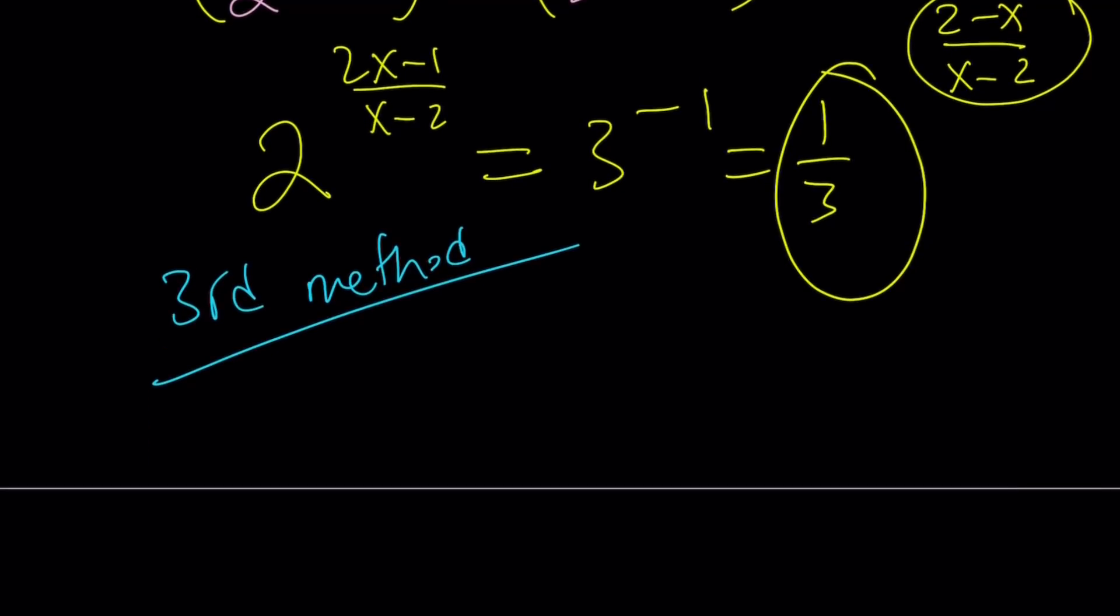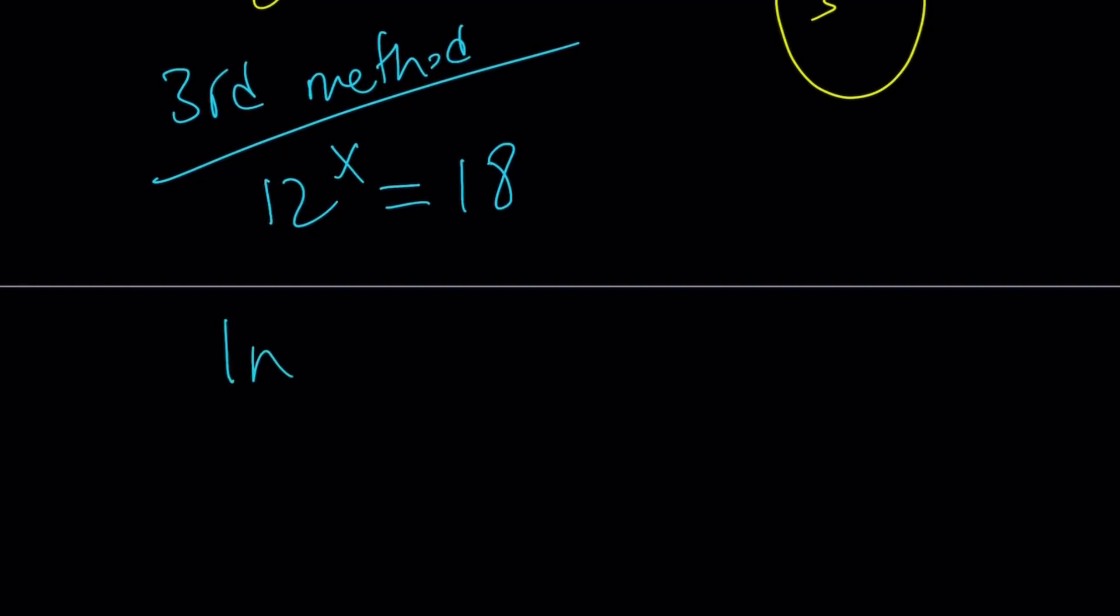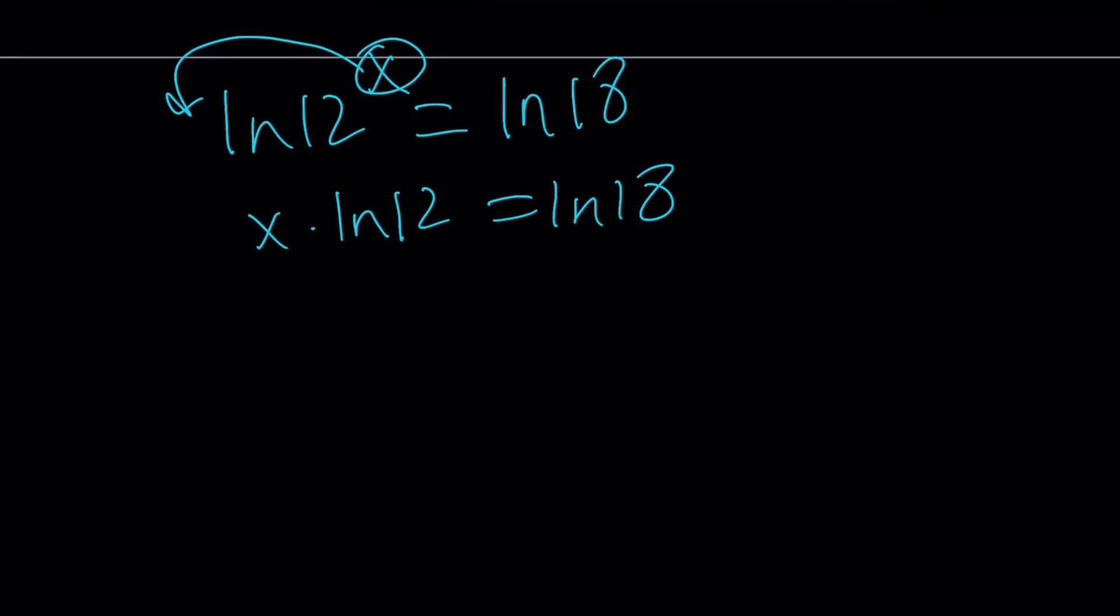The third method involves logs. But this time, I'm going to use ln. Now, I'm not going to follow the same method exactly. I'm just going to ln both sides. Okay. And then I get the following. Let's go ahead and move x to the front. And that's going to be like x times ln 12 equals ln 18.